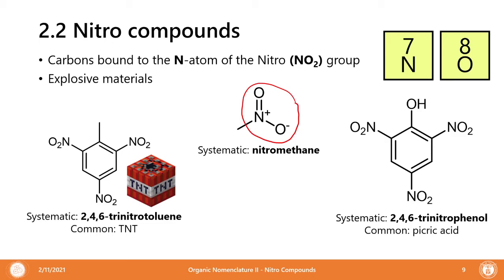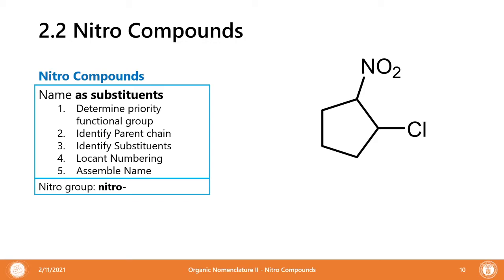When nitro compounds are burned, they form nitrous oxide or nitrogen gas, and that gas release is what causes the abrupt explosion. Nitro groups are actually very reactive materials. The nitro group, alkyl halides, and sulfides and ethers are all on a level playing field — they do not have any higher priority between each other.